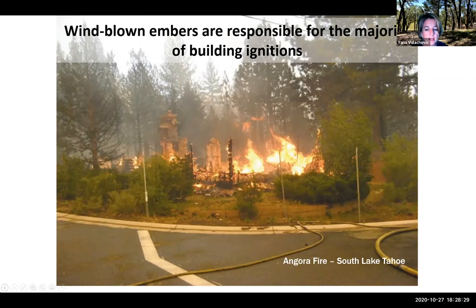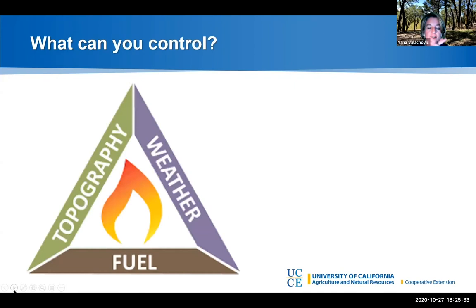I want to come back to fire behavior and the topography, weather, and fuel elements. What can you control? On the topography front, you can choose where you place or buy a home, but aside from that we're limited by where our towns, cities, and communities are. Weather is really hard to control. But the fuel element is the part that each of us can control.